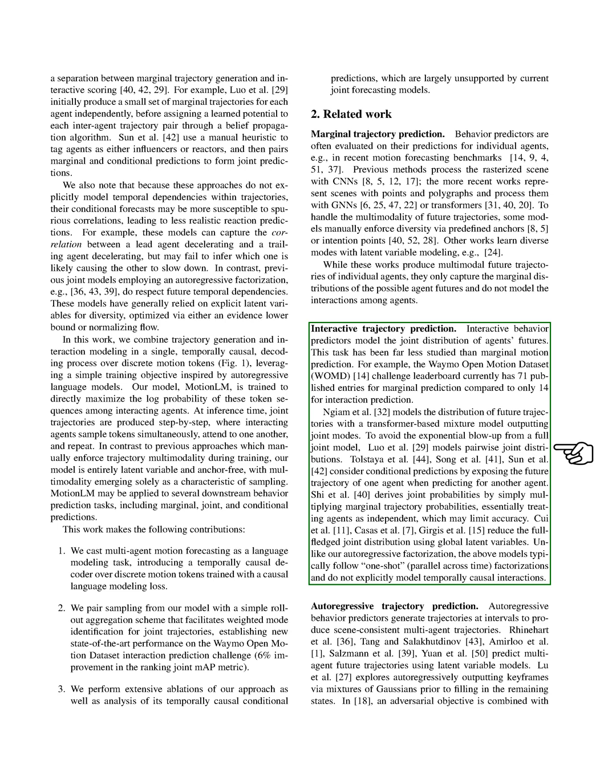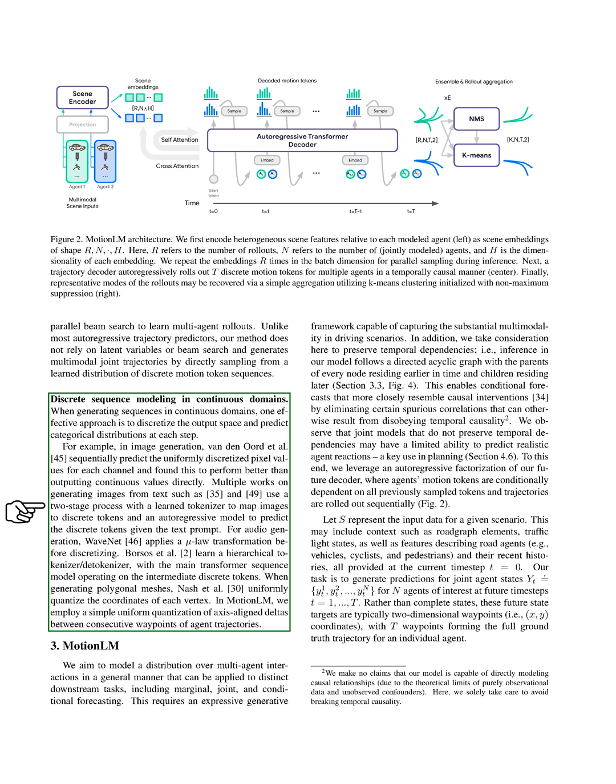Next, let's discuss discrete sequence modeling in continuous domains. When we're generating sequences in continuous domains, a common approach is to break down the output space into discrete parts and predict categorical distributions at each step. This approach has been used in various fields, such as image generation and audio generation. In our case, we use a simple uniform quantization of axis-aligned deltas between consecutive waypoints of agent trajectories. Now, let's move on to our main model, which we call MotionLM. Our goal with MotionLM is to model the interactions between multiple agents in a way that can be applied to different tasks.